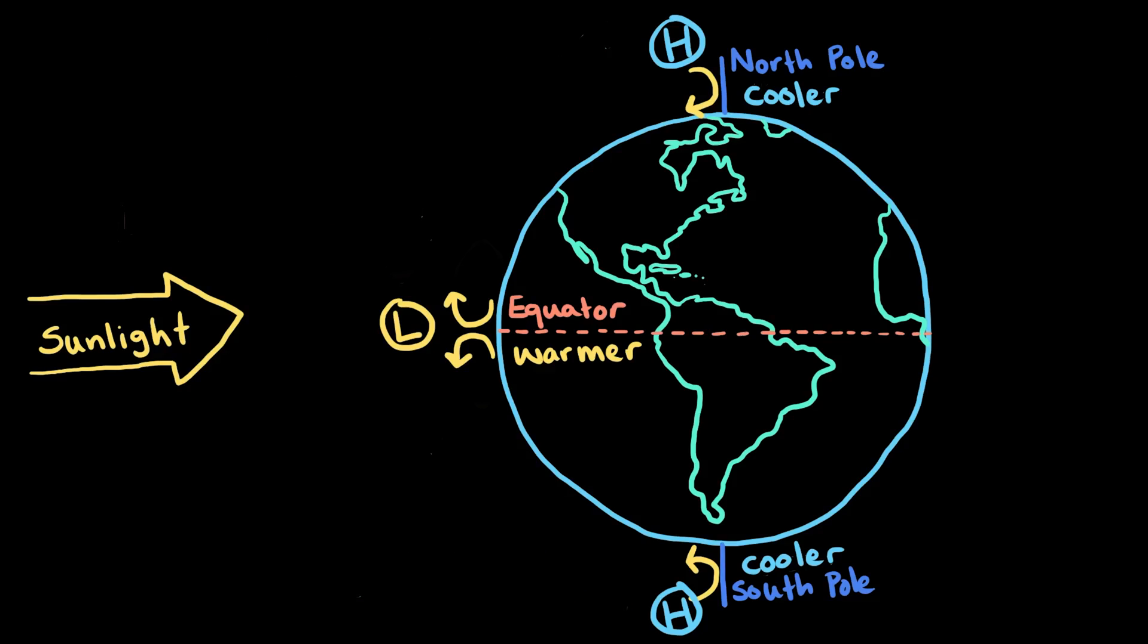The low pressure warmer air at the equator rises into the upper atmosphere where it cools and flows away towards higher latitudes, away from the equator.